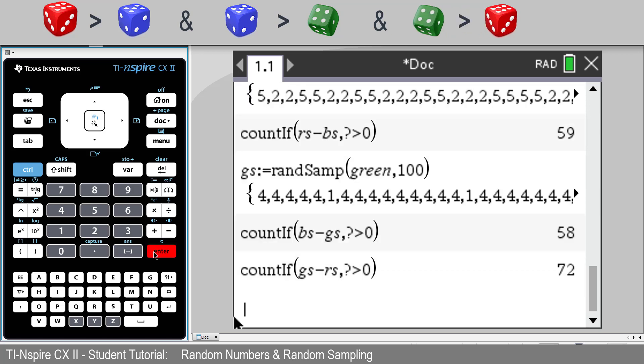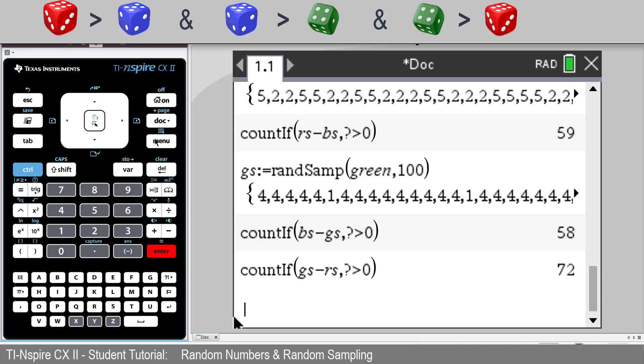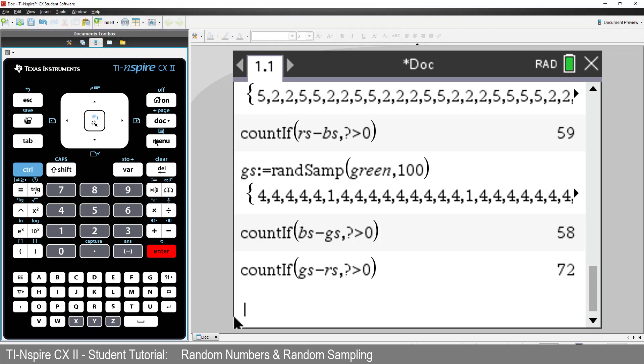Let's see. Hmm, seems like green beats red. That's weird. I did say they're unusual dice. So which dice is best? I'll leave that for you to explore.